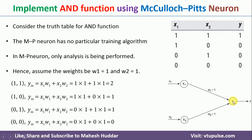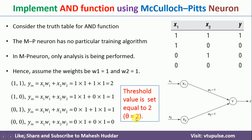We need to find the threshold value such that the neuron fires only when x1=1 and x2=1. Looking at the net inputs, theta should be a minimum of 2. If theta equals 2 or more, only the first condition (yin=2) will satisfy yin ≥ theta and the neuron will fire. In all other cases, where yin is 1 or 0, the neuron will not fire. So theta should be equal to 2.